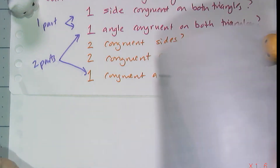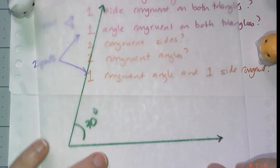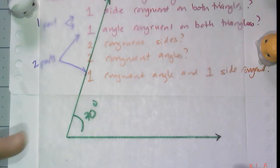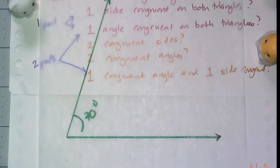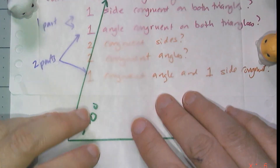What if I give you one angle? If I have two triangles that both have a 70-degree angle, are those triangles congruent? If someone gives me a 70-degree angle, how many different triangles can I construct with that? The answer is a lot. So one angle is not a shortcut I can use either.